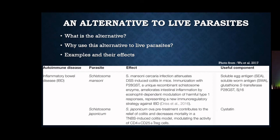One example of an alternative product is cystatin, a protease inhibitor. Protease is a molecule that breaks down protein in the body, and this molecule is important for antigen processing, protein catabolism, and inflammation. Cystatin targets white blood cells that dampen the immune response and help with autoimmunity. It has also been shown to help mice with colitis — it suppresses inflammation, decreases epithelial damage, and decreases immune cell infiltration into the intestine.